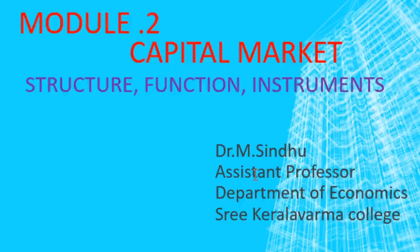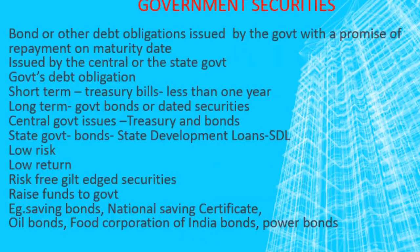Welcome to Capital Market Structure, Function and Instruments. Today we are going to discuss another important instrument of capital market, that is government securities. Government securities are bonds or other debt obligations issued by government with the promise of repayment on maturity date. We will get back the amount on the date of maturity without any delay. This type of bonds or debt obligations of the governments are known as government securities.